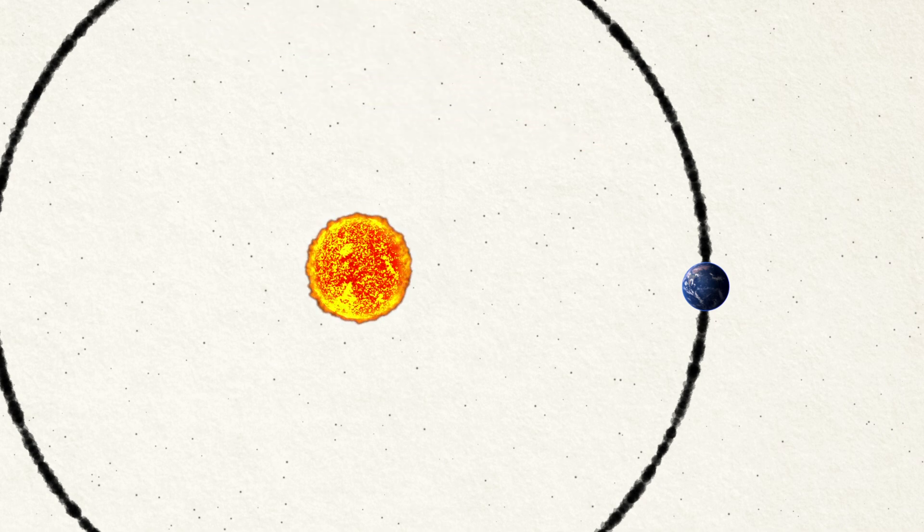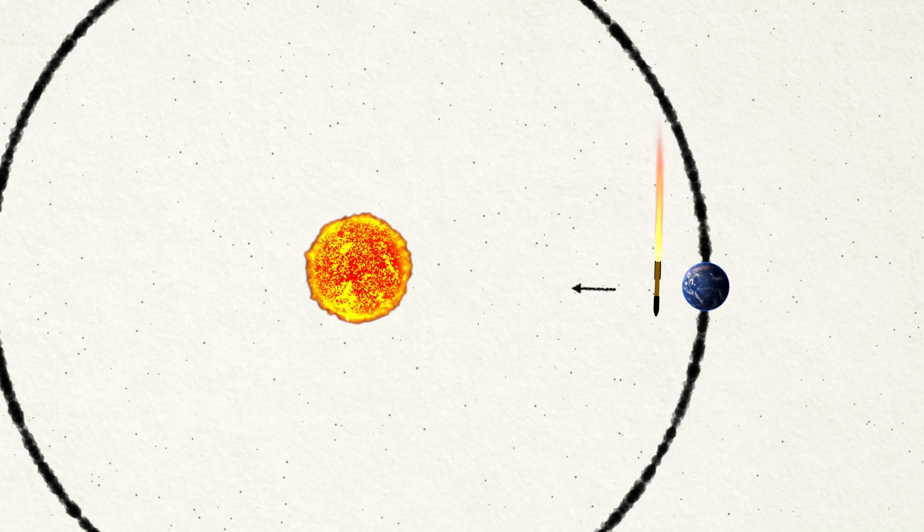The only way to get the rocket to go right into the Sun is to cancel all that sideways motion. Leave even a little bit, and it will miss the Sun and enter a new orbit. To cancel Earth's motion, you have to launch the spacecraft backward as fast as Earth is hurtling forward. But 67,000 miles an hour is really fast.